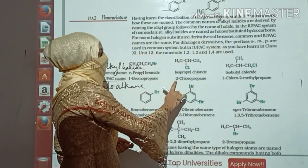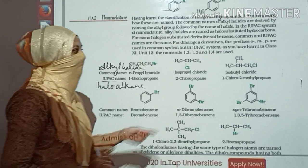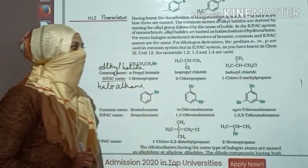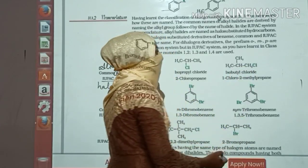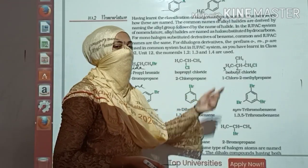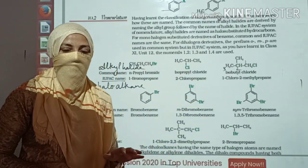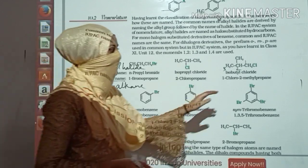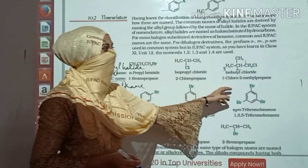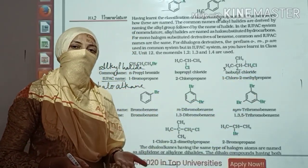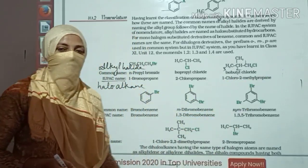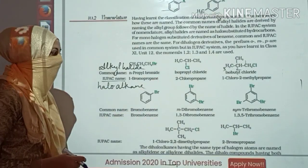The second structure: isopropyl chloride is 2-chloropropane in IUPAC. Also, isobutyl chloride is 1-chloro-2-methylpropane. Dear student, when we go for numbering — 1, 2, 3 — how do we name them? When talking about naming, you need to know the alphabetical order of substituents. For example, chlorine starts with C and methyl starts with M. You have to remember the alphabetical manner — that is how you write their names.